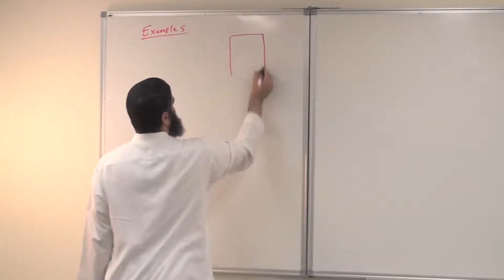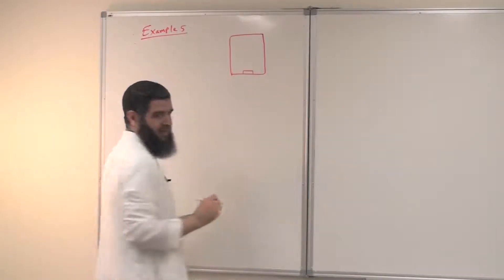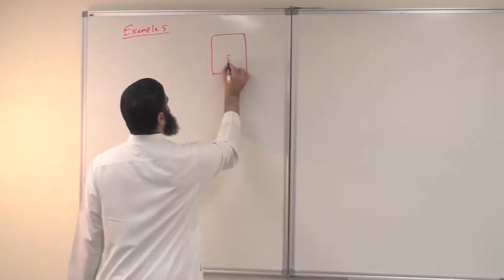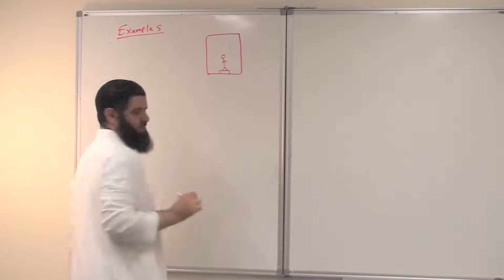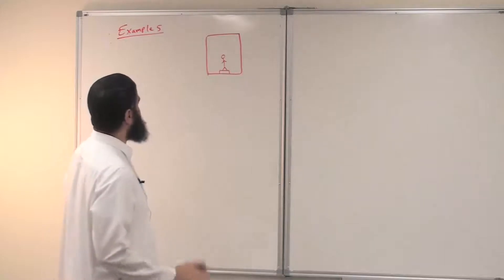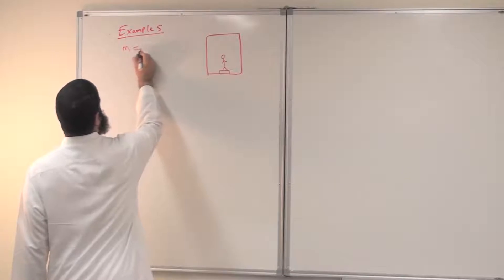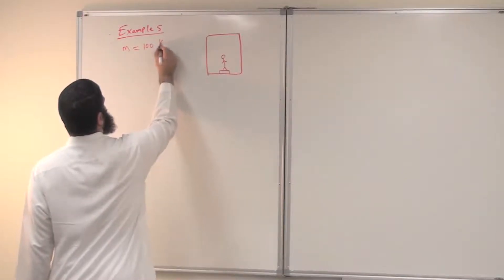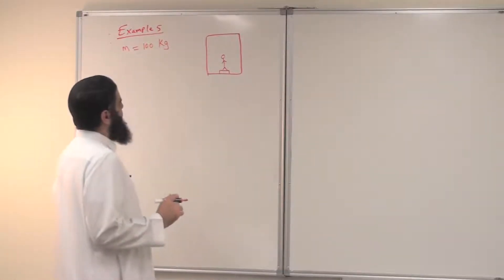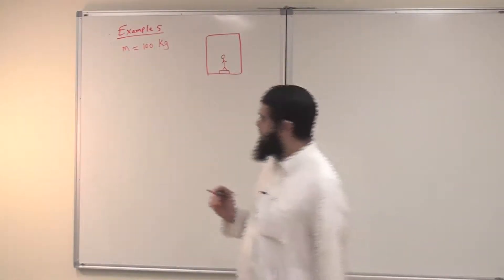Let me draw the elevator. This is the elevator and we have a person standing on a balance scale. So here we have a balance scale and the passenger is standing on that scale. The mass of this passenger is 100 kilograms, just to make it easy for calculations. And we would like to ask about the reading of the scale.